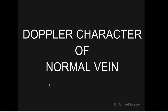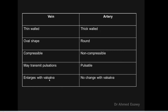The Doppler characteristics of a normal vein: veins are seen as thin-walled while arteries are echogenic; veins are oval-shaped while arteries are rounded; veins are compressible while arteries are non-compressible; veins may transmit pulsations while arteries are pulsatile; veins change with Valsalva while arteries show no change with Valsalva.